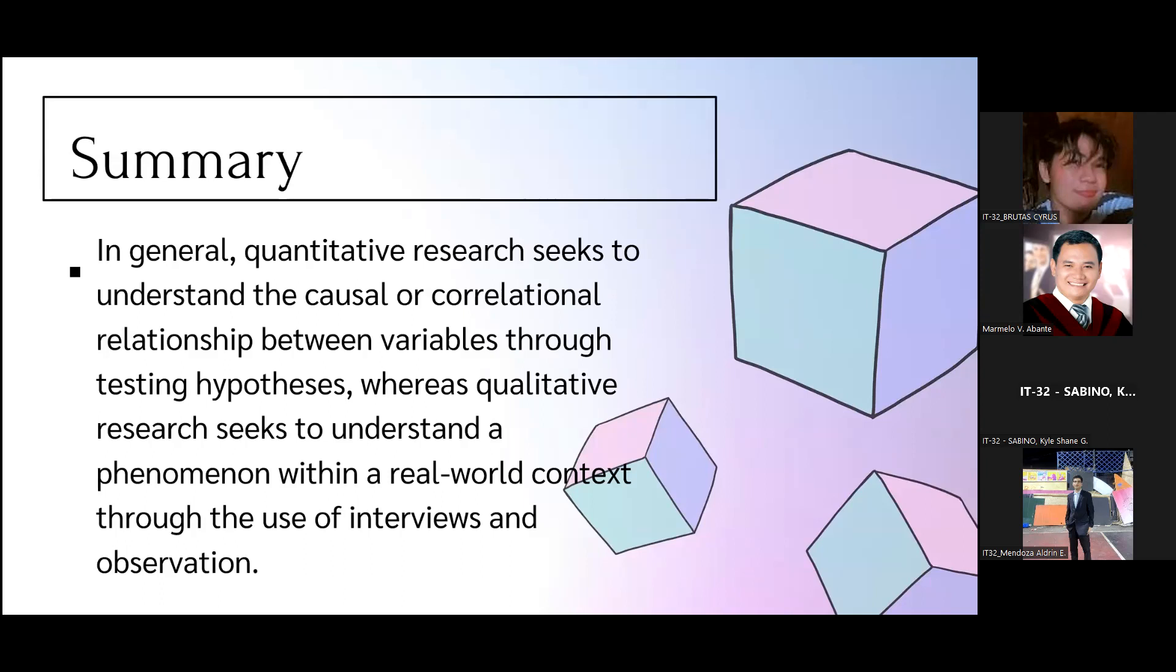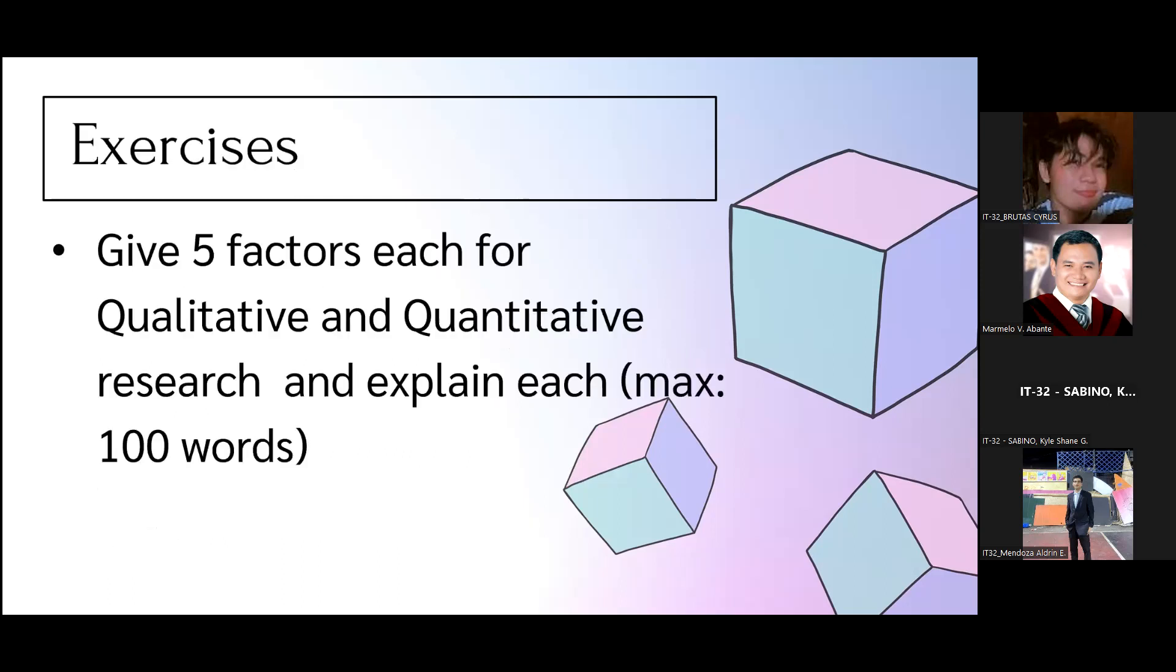In summary, in general, quantitative research seeks to understand the causal or correlational relationship between variables through testing hypotheses, whereas qualitative research seeks to understand the phenomenon within a real-world context through the use of interviews and observation. That's all for my report on the nature of data. For the exercise, give five factors each for qualitative and quantitative research and explain each with a maximum of 100 words. Thank you. Okay, thank you so much.